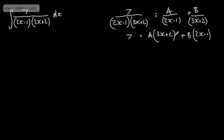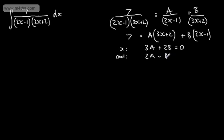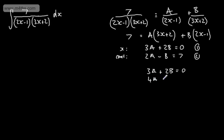I'm going to solve a simultaneous equation. Looking at terms in x, we get 3a plus 2b equals 0. Considering the constants, we get 2a minus b equals 7. Calling these equation 1 and equation 2, we can double up equation 2, giving us 3a plus 2b equals 0 and 4a minus 2b equals 14.